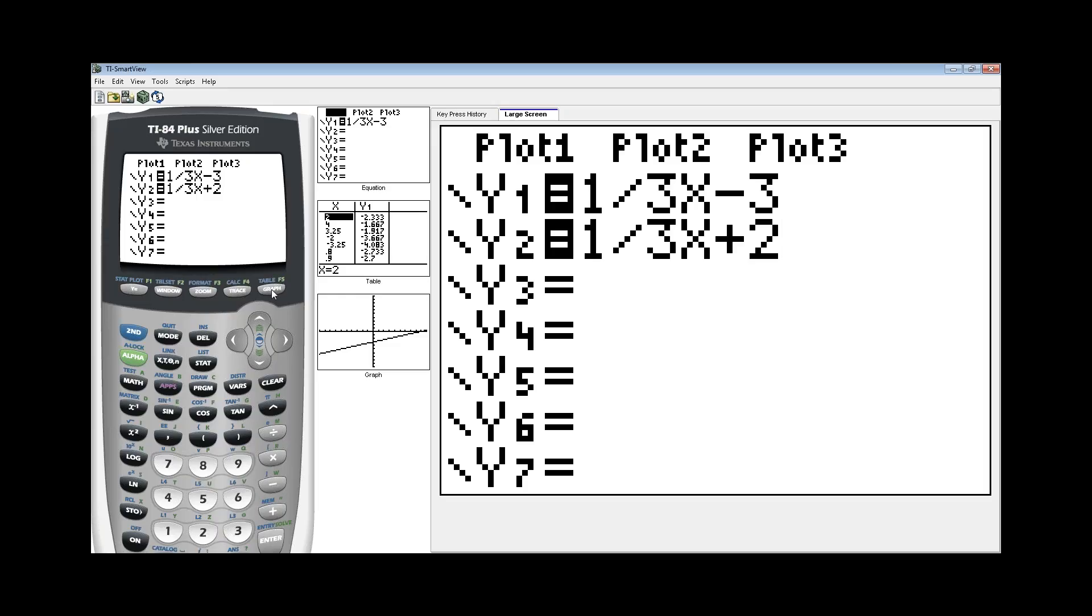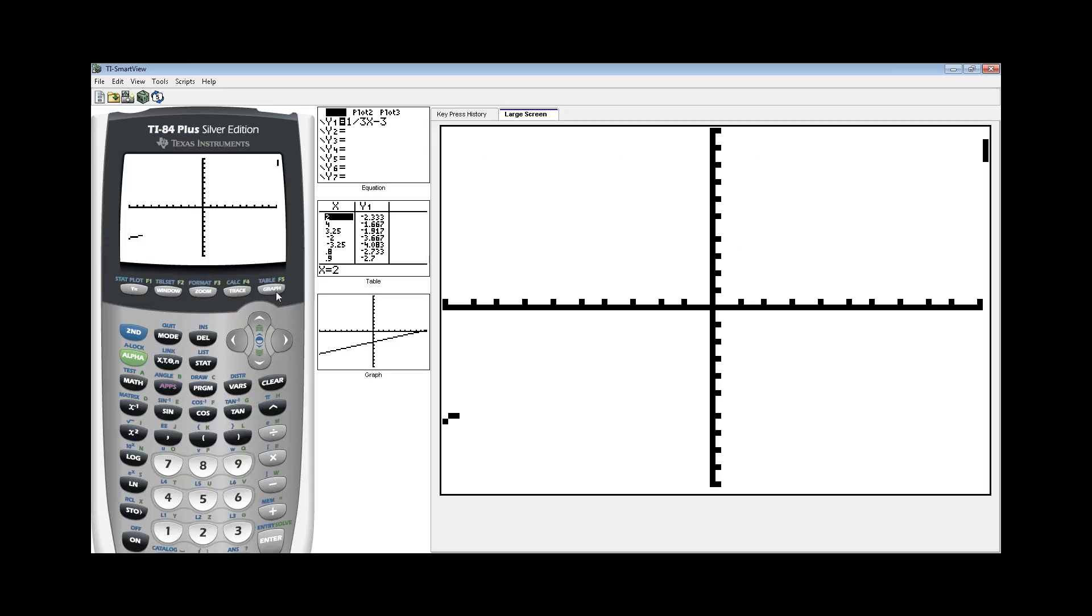If we're going to hit graph now, we can see our first line being drawn and then our second line being drawn. So both of these are parallel lines, which means they never ever cross. So for this system, there is no solution.